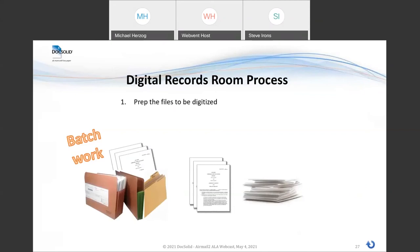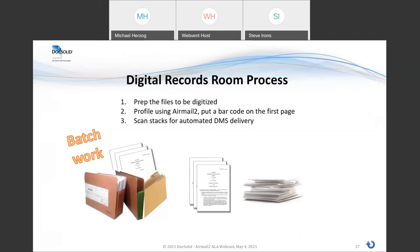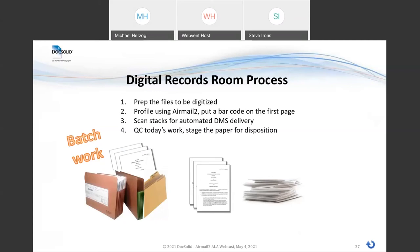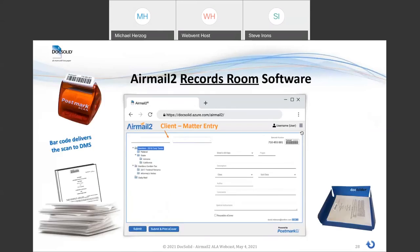We're going to profile using the AirMail 2 records room software — a different software user interface — and then get a barcode on the first page. The scanning is going to be the same: press one button, scan stacks. We're also going to run a QC process using the same software. So although we're building out solutions for these different jobs, we're getting a lot of use from our software platform. This is the AirMail 2 records room software — a different user interface.